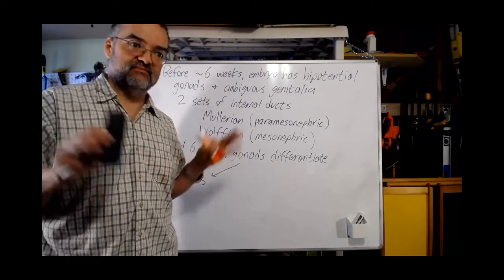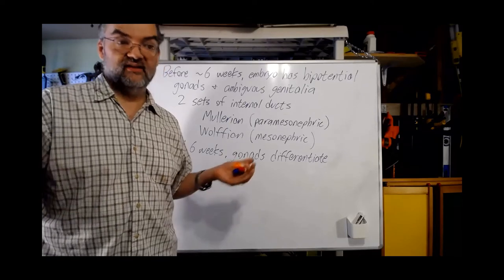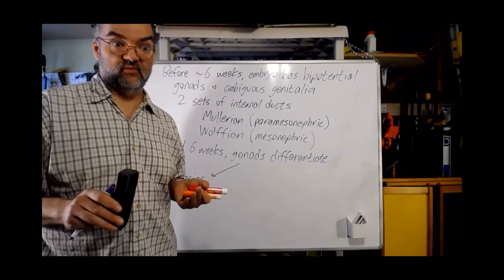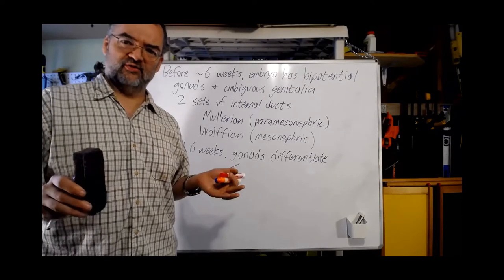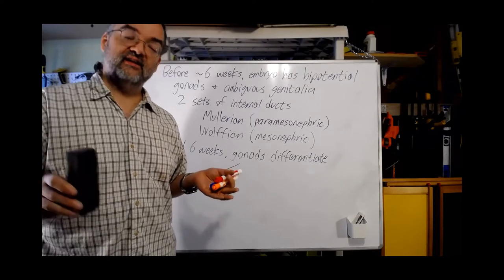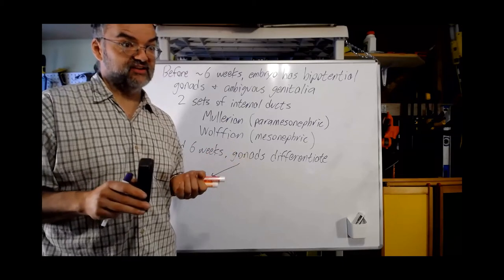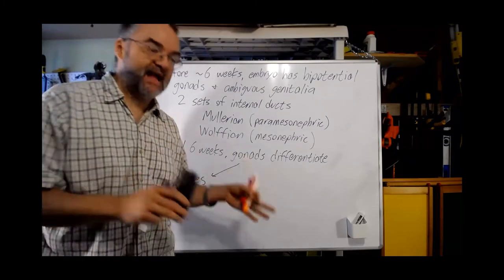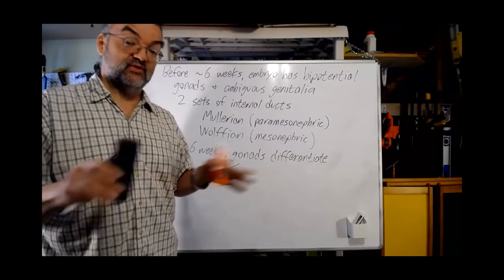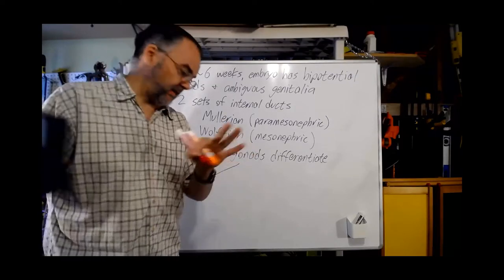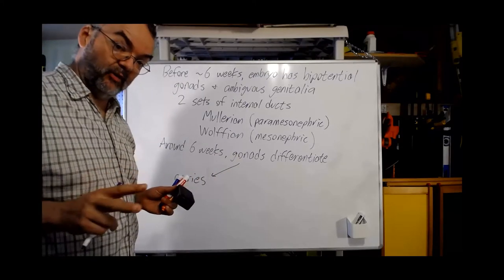Usually, in the absence of those signals, the body becomes female. In a way, the default body plan is female. You might wonder why males have nipples even though they don't nurse children — the answer is because the default body plan is female, and you masculinize it if you're going to become male. The default pattern is for gonads to become ovaries.